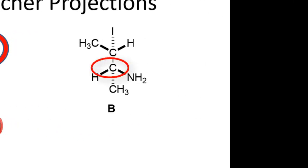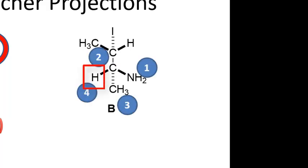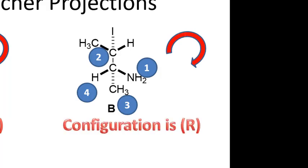For the bottom stereocenter of isomer B, the same principle applies. Hydrogen is horizontal again. Nitrogen is priority one, the top stereocenter carbon is two, and the methyl group is three. Counting gives counterclockwise, which under normal conditions would be S, but because hydrogen is horizontal the configuration is also R. So the overall configuration for this molecule is RR.